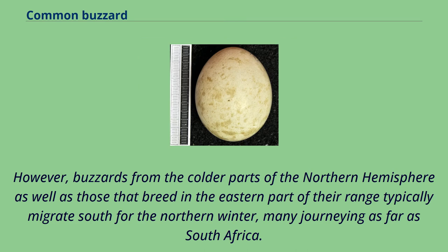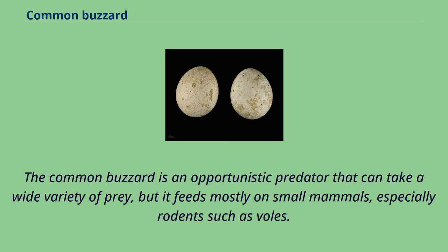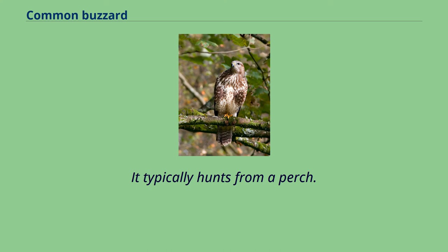However, buzzards from the colder parts of the northern hemisphere, as well as those that breed in the eastern part of their range, typically migrate south for the northern winter, many journeying as far as South Africa. The common buzzard is an opportunistic predator that can take a wide variety of prey, but it feeds mostly on small mammals, especially rodents such as voles. It typically hunts from a perch.